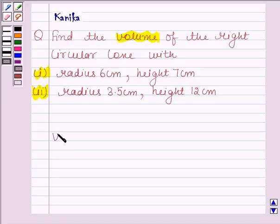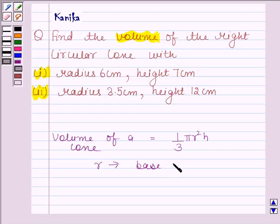Before solving this question we should know the formula for finding the volume of a cone. Volume of a cone is equal to 1/3 πr²h where r is the base radius and h is the height of the cone.